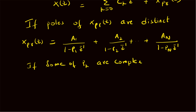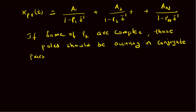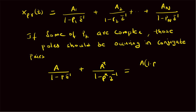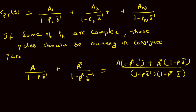If some of the poles p_k are complex, then those complex poles must occur in conjugate pairs. When we combine two conjugate poles, we have the term A divided by (1 minus p z-inverse) and its conjugate pair A-conjugate divided by (1 minus p-conjugate z-inverse). When combined, the numerator becomes A times (1 minus p-conjugate z-inverse) plus A-conjugate times (1 minus p z-inverse), and the denominator is (1 minus p z-inverse) times (1 minus p-conjugate z-inverse).